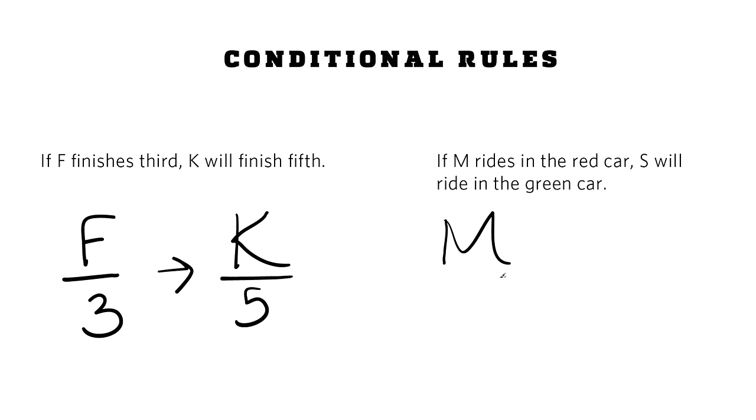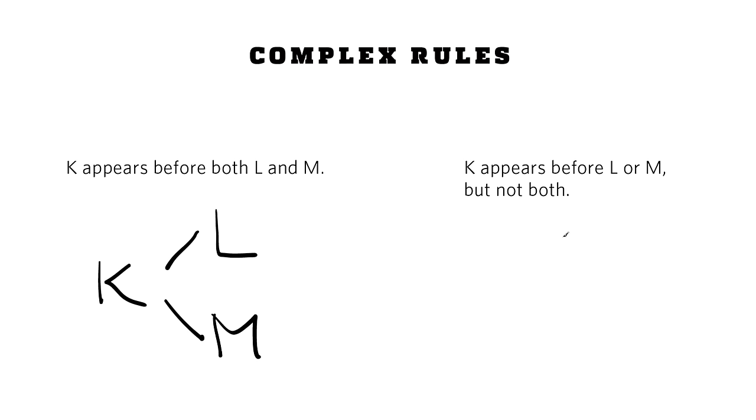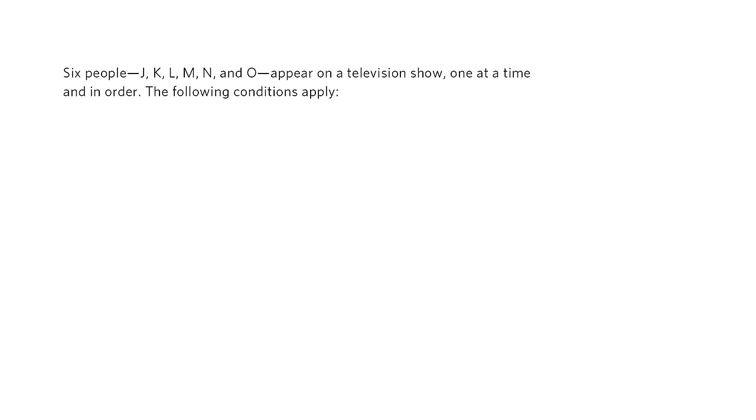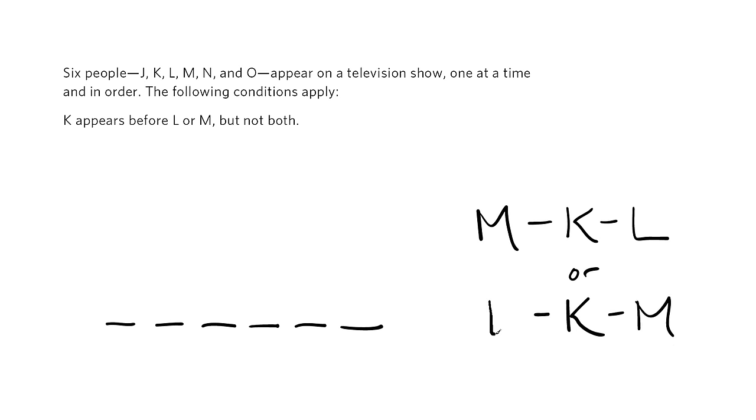We'll always notate conditional relationships using arrows. And finally, some rules are complex. They involve multiple components, typically by using the words and or or. Here are some examples. Complex rules can be intimidating, but they're also often very, very useful. Let's use a simple example to illustrate why. Imagine you had this game and got this rule. Notice that by itself, this rule helps dictate three of six assignments. Half the board, and commonly when it's coupled with some of the other rules of the game, the complex rule will be the most important one in terms of dictating where elements can and cannot go.